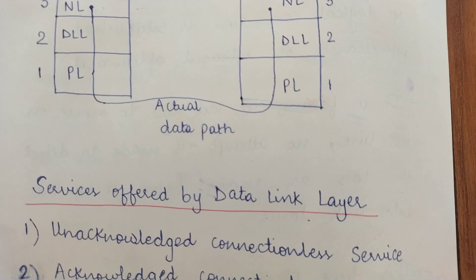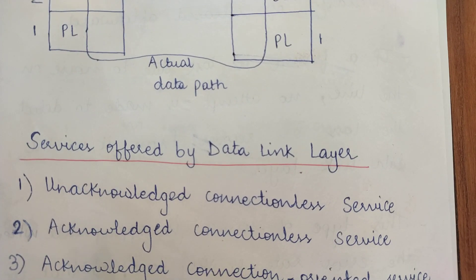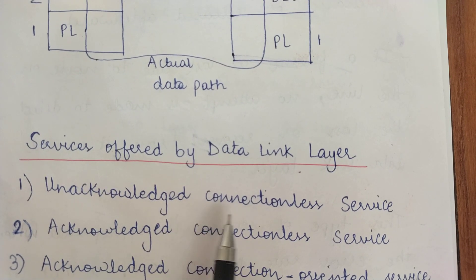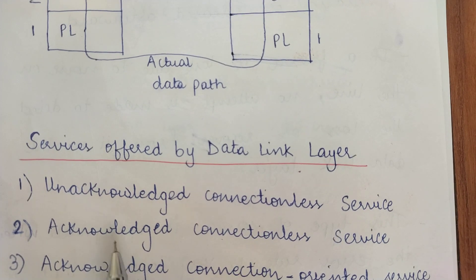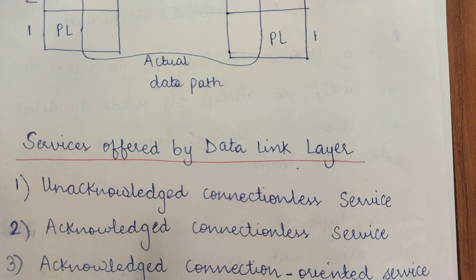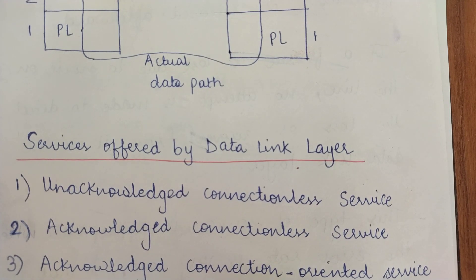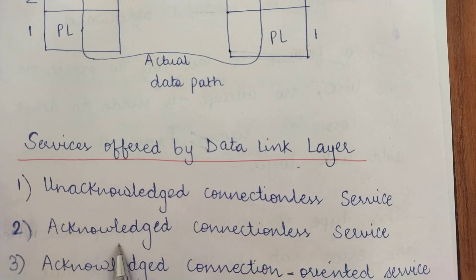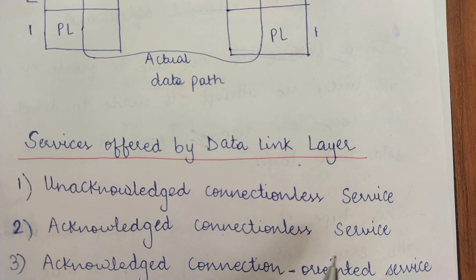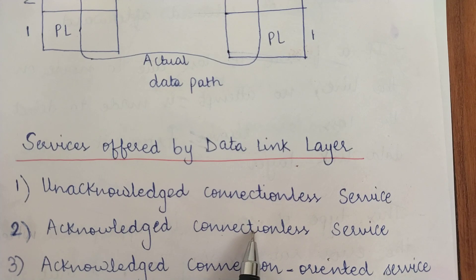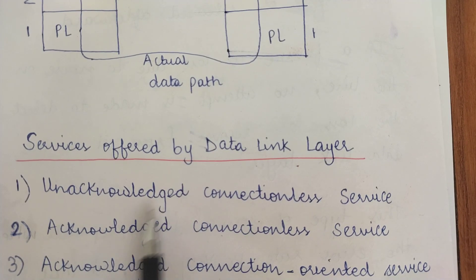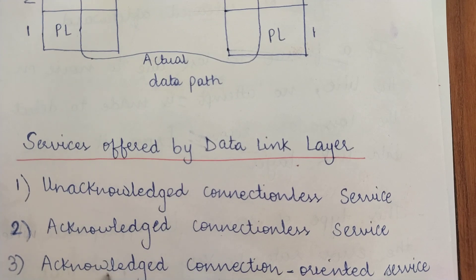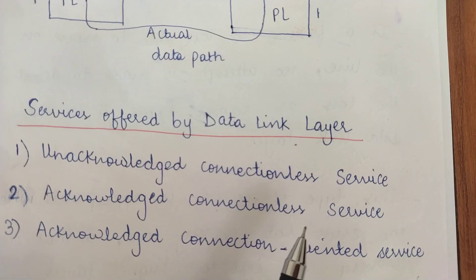Now let us look at the main services offered by the data link layer. The first one is unacknowledged connectionless service. The second is acknowledged connectionless service. And the third is acknowledged connection-oriented service. The first two services are both connectionless — the only difference is the first one is unacknowledged and the second one is acknowledged. The third service is both acknowledged and connection-oriented.